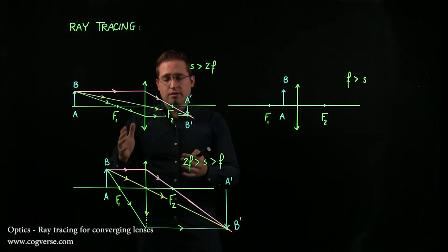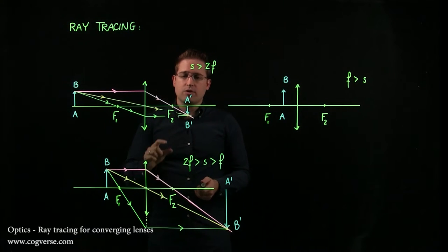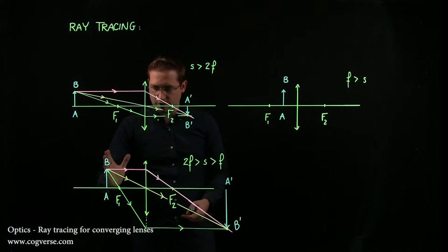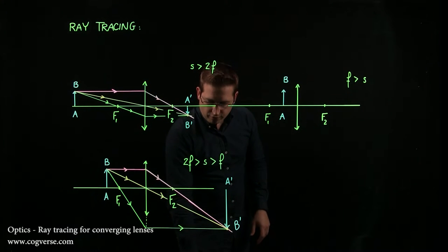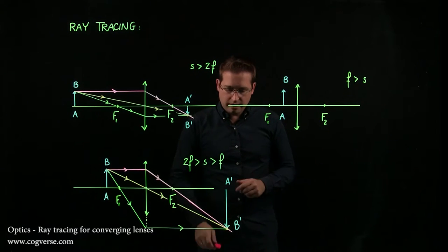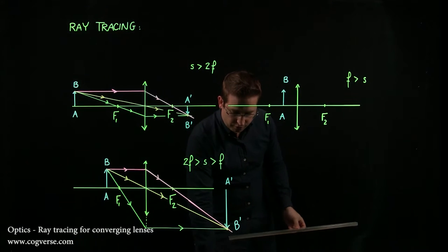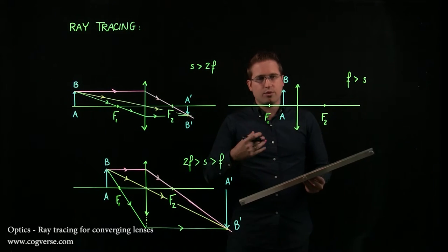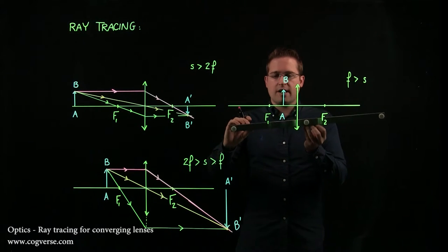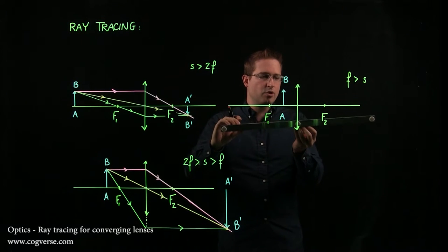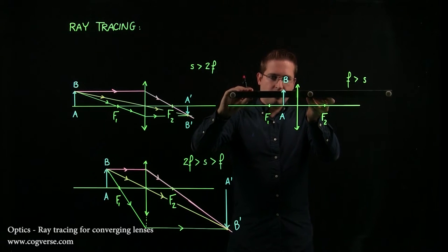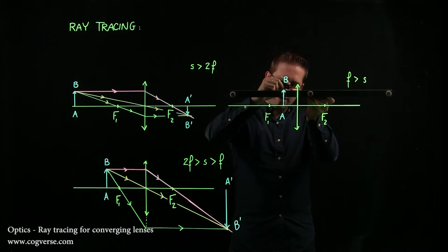And therefore these two cases are very similar. The only difference is here you get a smaller image. Here you get a bigger one because the object is closer. However, if you come too close, then you're in this situation and we'll see that things change a little bit. Of course, the rules don't. But the way you do ray tracing might seem a bit strange because this time we need to have a look at the emerging rays and where they appear to intersect.